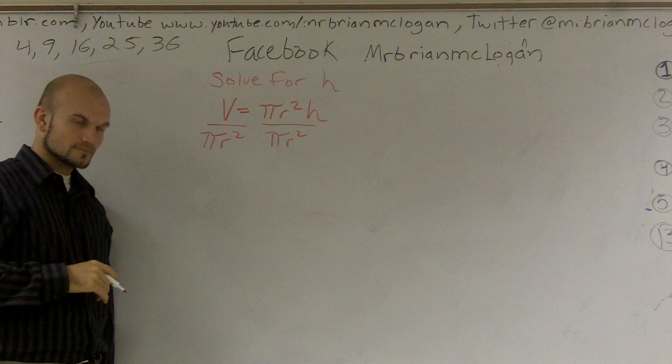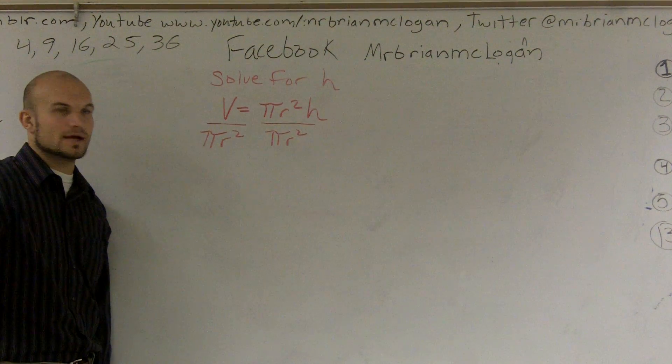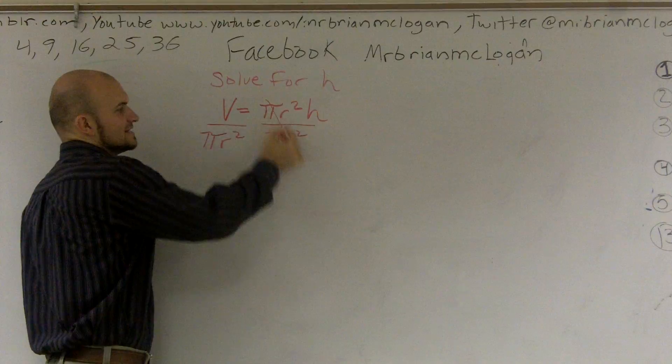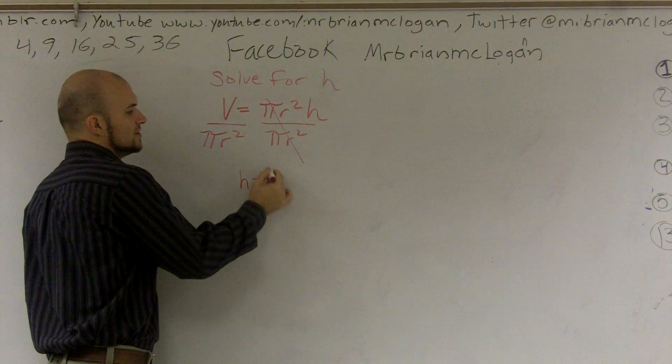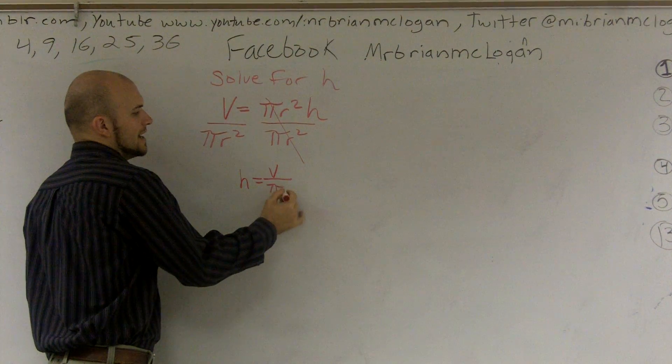Pi is 3.14159, and it goes on and on and on. Hold up. So let me just finish up. These cancel out. H equals V over pi r squared.